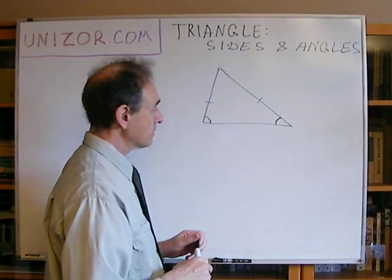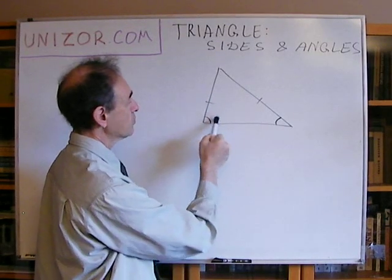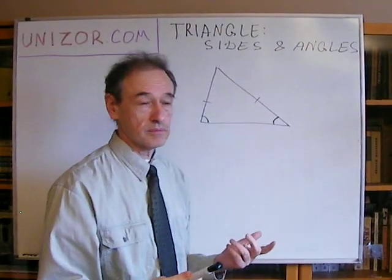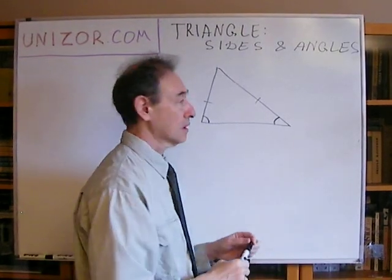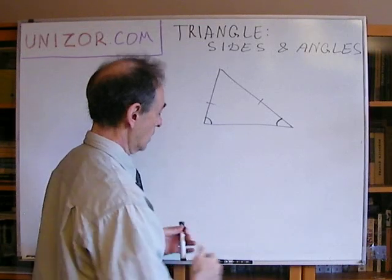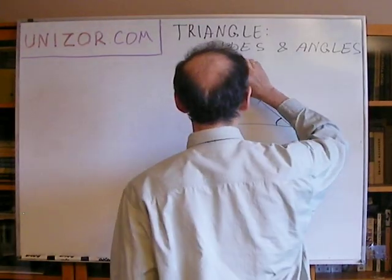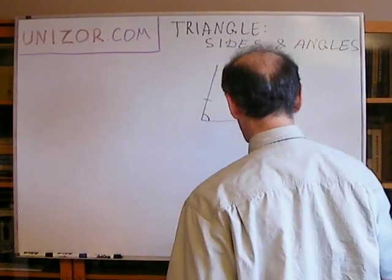And another theorem is that if one side is bigger than another side, then the corresponding angle is also bigger. Okay, let's start with the first one. If sides are equal, then it's quite easy to prove that the corresponding angles are equal as well.